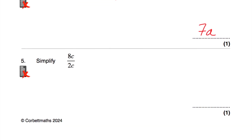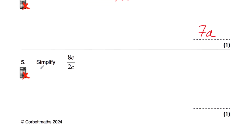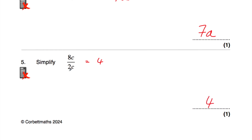Question number 5 says simplify 8c divided by 2c. Let's divide the numbers and then divide the letters. 8 divided by 2 is 4. And c divided by c — if you divide something by itself you get 1, so these cancel out. That gives us 4 times 1, which is just 4. We can check: 2c multiplied by 4 is 8c.